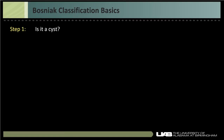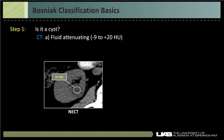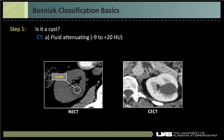The first Bosniak classification basic: is it a cyst? On CT, a cyst is fluid attenuating, meaning minus 9 to plus 20 Hounsfield units on non-contrast imaging — for example, 14 or 16 Hounsfield units would be a cyst, which we can classify as benign statistically. A hyperdense mass that does not enhance is also a cyst. If a mass measures 40 Hounsfield units on contrast-enhanced study, comparing non-contrast to nephrographic phase shows no significant change, confirming it's a non-enhancing hyperdense cyst.